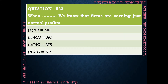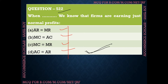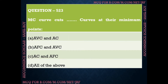Question number 522: When we know that firms are earning just normal profits — four options are given. First: average revenue is equal to marginal revenue. Second: marginal cost is equal to average cost. Third: marginal cost is equal to marginal revenue. Fourth: average cost is equal to average revenue. The correct answer is option D — when average cost is equal to average revenue, the firm earns just normal profits.